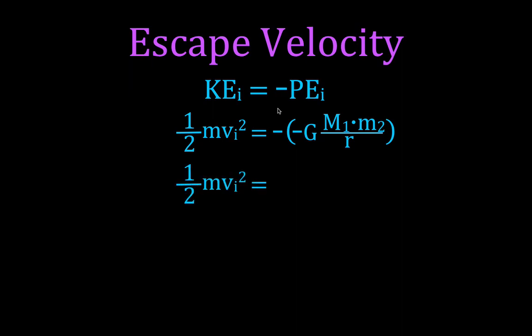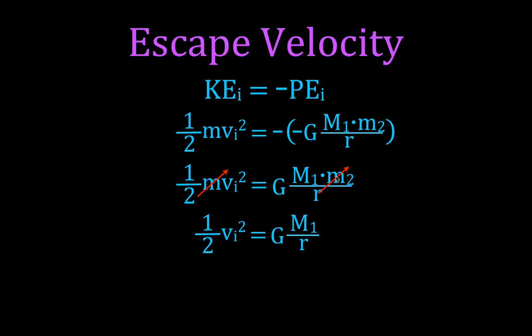Just to simplify: we get that one-half mv squared is equal to G times m1 times m2 divided by r — a minus times a minus is a plus, so no more negative signs. Now this mass here is the mass of the object getting ready to move with its initial velocity, and this mass is when it's sitting on the surface of the Earth — so those masses are the same, they cancel. That means we're left with one-half v-initial squared equals G times m1 divided by r.